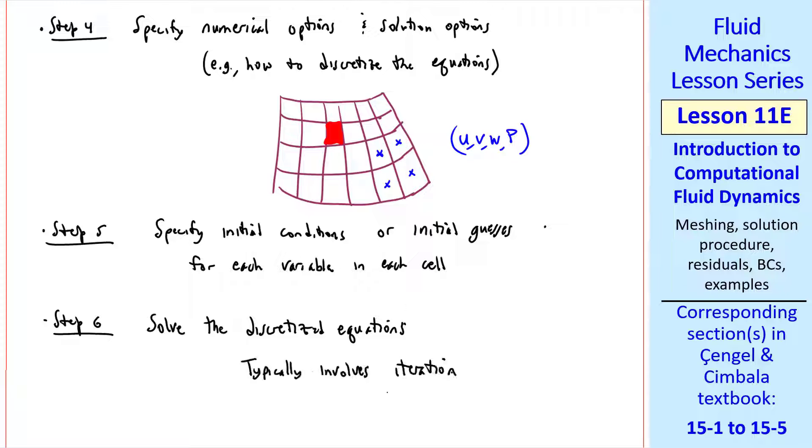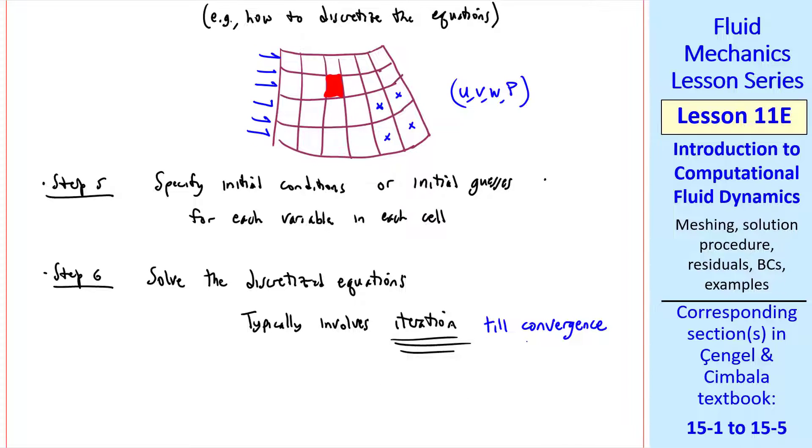Step 6 is to solve the discretized equations. This typically involves iteration. For this little example, we might specify all the velocity components to be zero and the pressure to be constant. But when we apply our boundary conditions, like a velocity inlet and perhaps a pressure outlet, all four of these variables will change everywhere in the flow. But we keep updating our guesses until we converge on a solution. Our goal is to get convergence, which means that the equations are satisfied at every cell to within some tolerance.